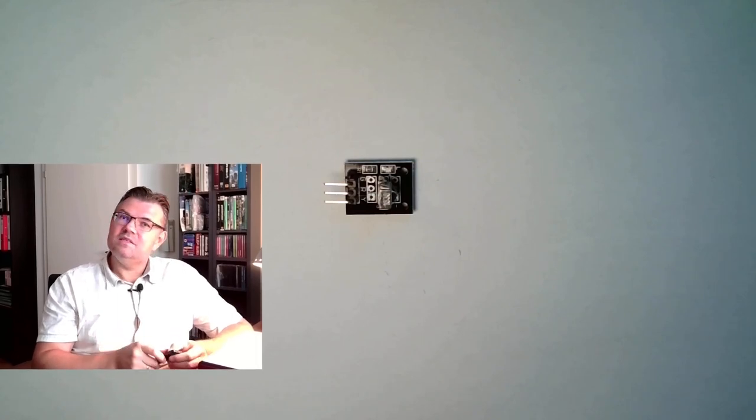This infrared light here is flashing with 38 kilohertz. And it's modulating a pulse width modulation. So every button has a specific width of this 38 kilohertz bursts.